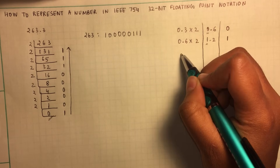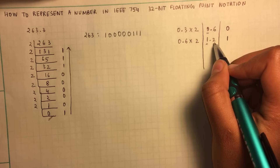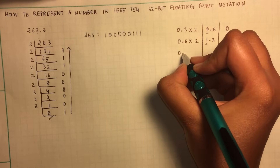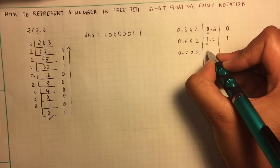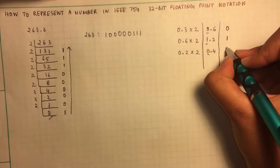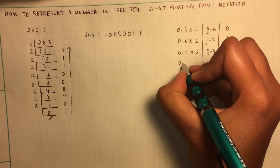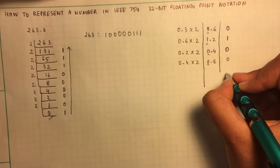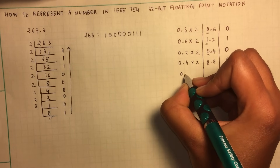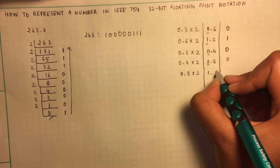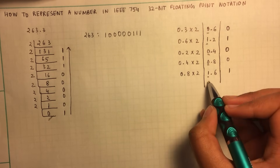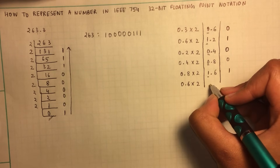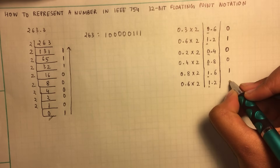Instead of doing 1.2 times 2 for the next step, you just take the digit that follows the decimal point, so that would be 0.2 times 2, which gives 0.4 — this digit is 0. Then 0.4 times 2 gives 0.8, keep track of 0. Then 0.8 times 2 gives 1.6, keep track of 1. Then 0.6 times 2 gives 1.2, keep track of 1.